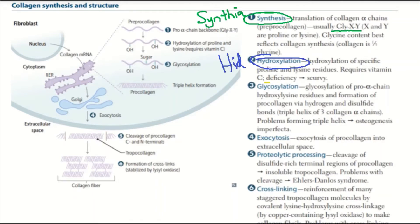Next, 'Glick' stands for glycosylation — glycosylation of pro-alpha chain hydroxylysine residues and formation of procollagen through hydrogen and disulfide bonds. Glycosylation is basically the addition of a sugar, as we see here. Next, we're up to exocytosis, where we leave the cytoplasm, represented by 'expensive.'